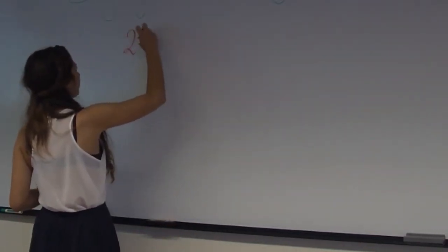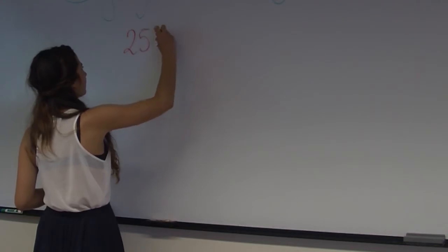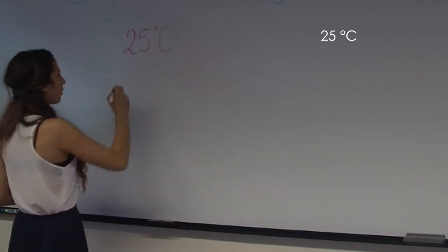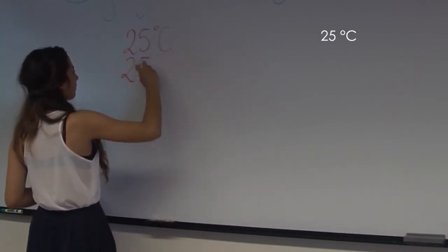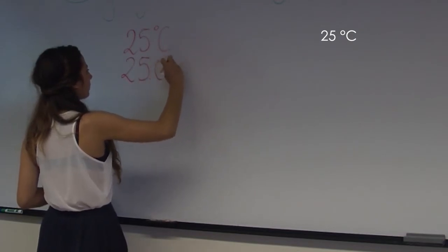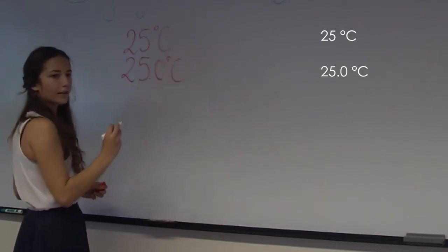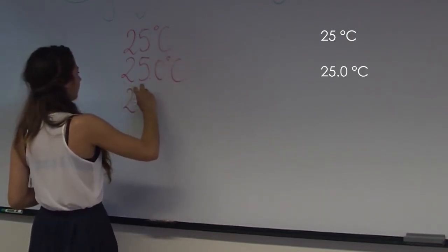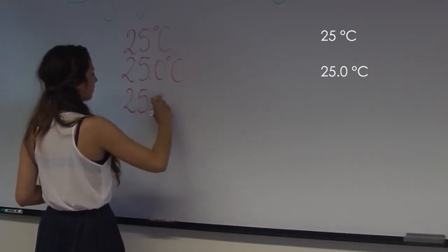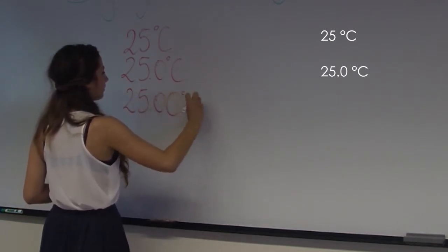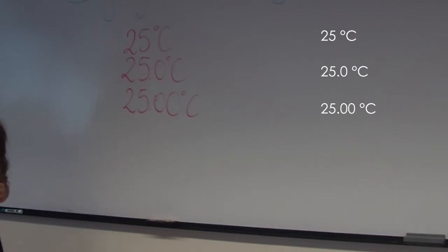If I tell you that the temperature in the lab is 25 degrees Celsius, I can write it in any of the following ways. I can write 25 degrees, or I can write 25.0 degrees, or I can even write 25.00 degrees, and so on.